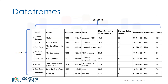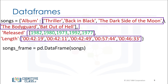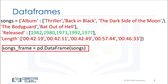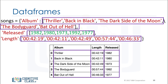A data frame is comprised of rows and columns. We can create a data frame out of a dictionary. The keys correspond to the column labels and the values are lists corresponding to the rows. We then cast the dictionary to a data frame using the function DataFrame. The keys correspond to the table headers and the values are lists corresponding to the rows.